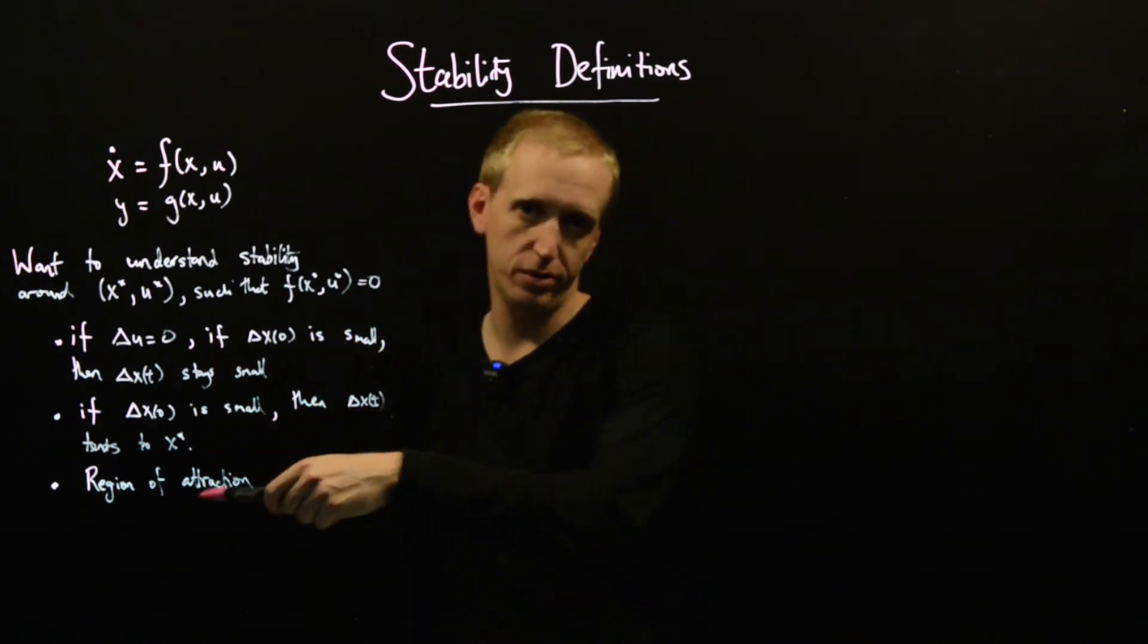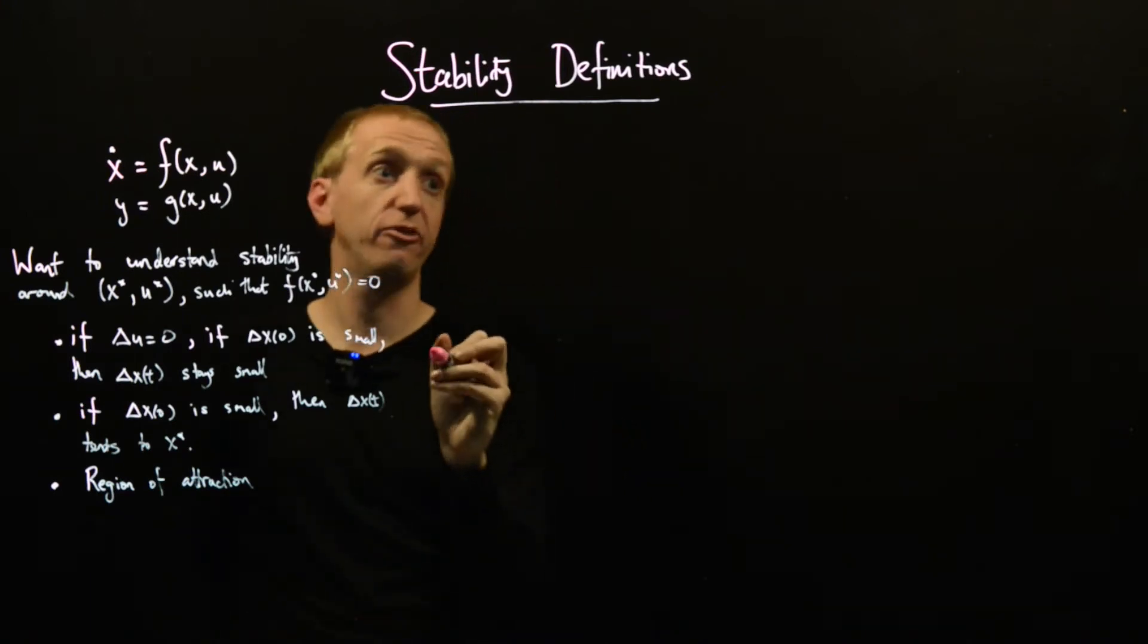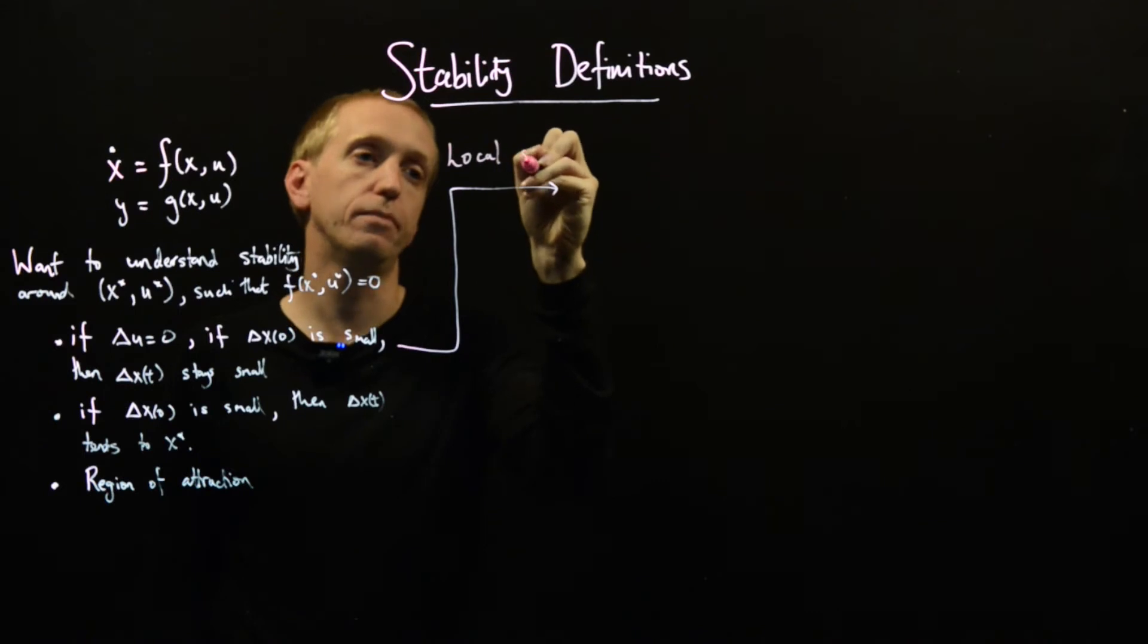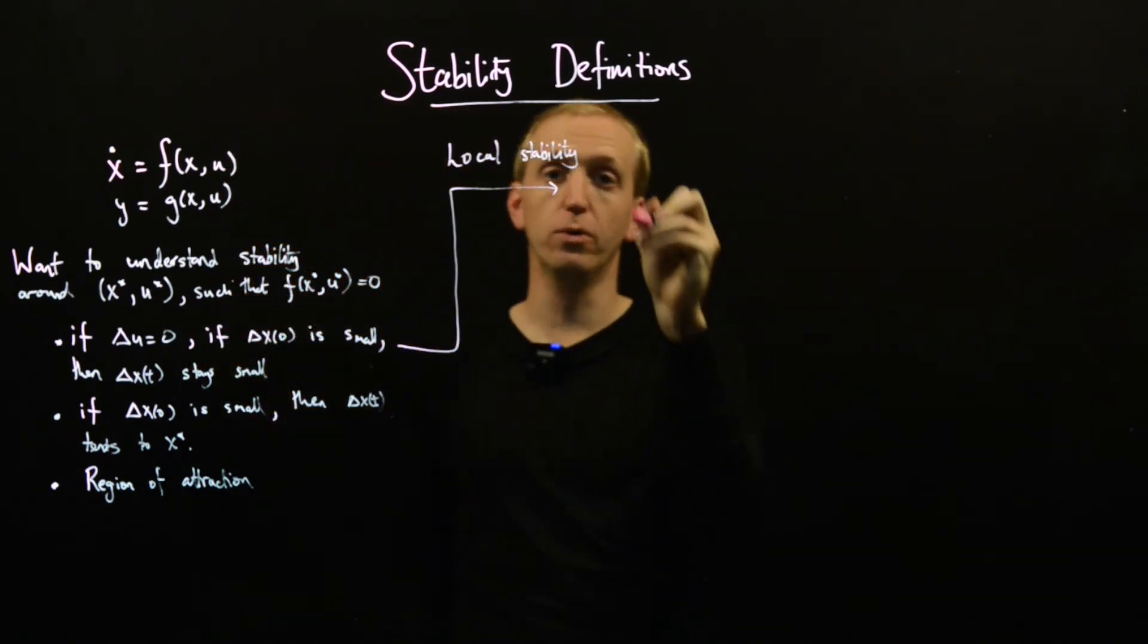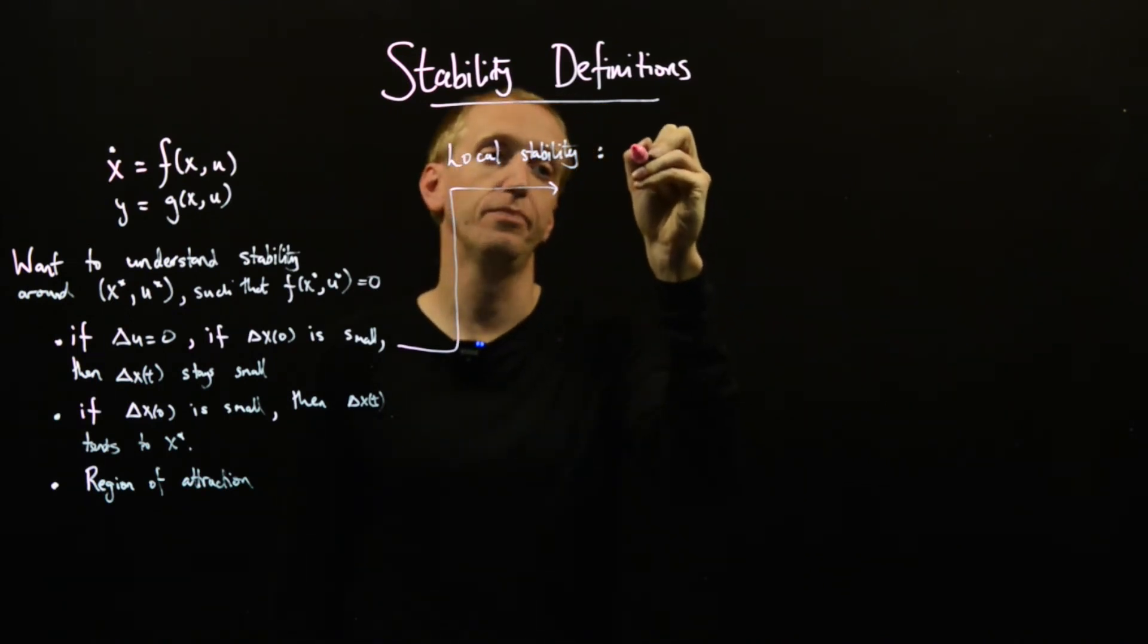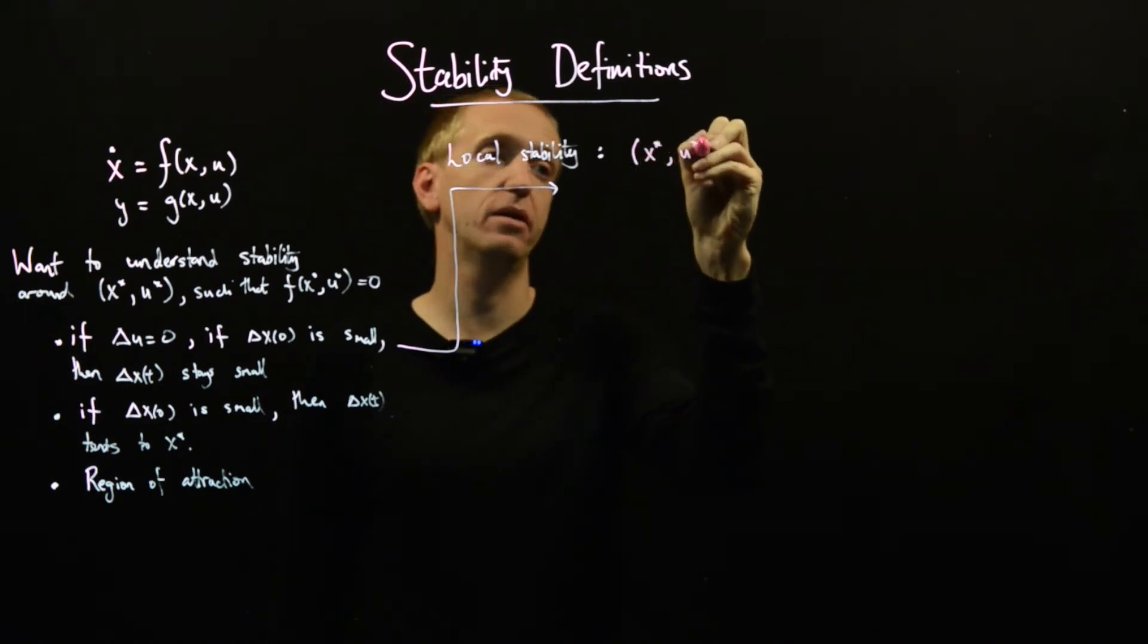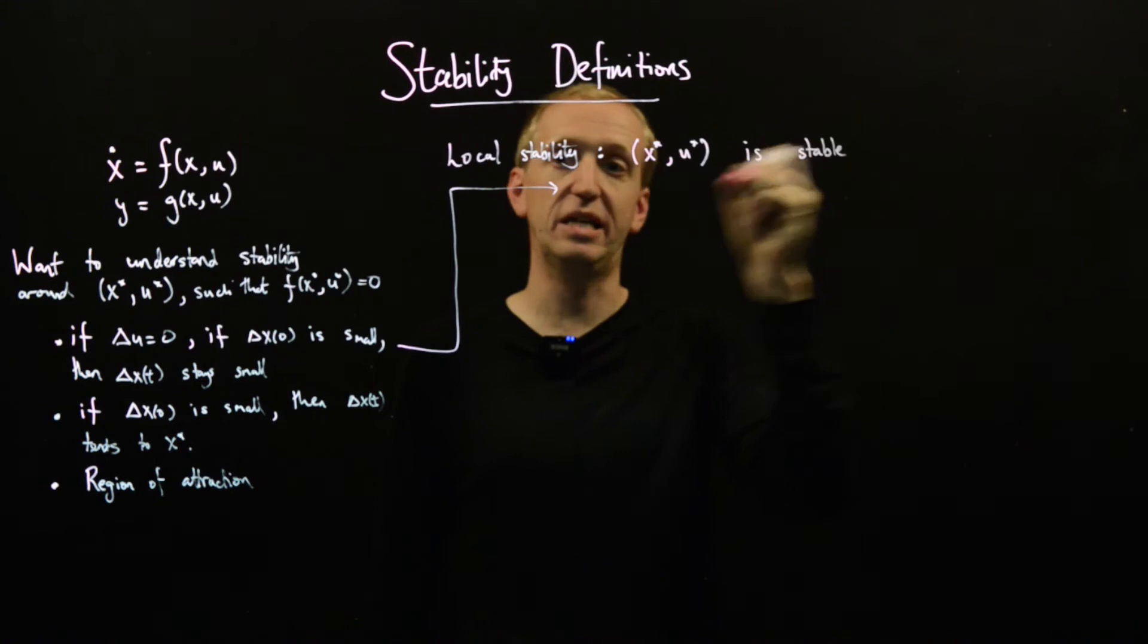So how are these three notions typically captured or turned into a definition of stability? Well, let's take the first one. So the first one is typically turned into a notion of what's called local stability. And if we try to turn this sort of text into a formal or a more formal definition, what we might say is that we could define local stability to be as follows. So we could say our equilibrium point, x star, u star, is stable, and here by stable we mean locally stable.